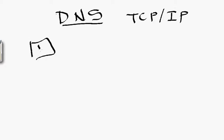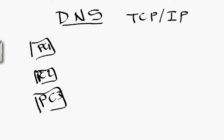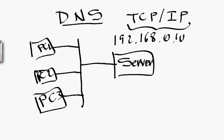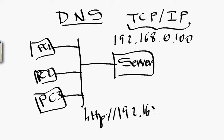Assume, for example, you have a small network with PC1, PC2, PC3 — three PCs connected through a LAN. Let me represent this LAN using bus topology. We also have a server — it can be any server like a web server. With TCP/IP, we identify computers using their IP address. Let's say the IP address of the server is 192.168.0.100, assigned to the server.